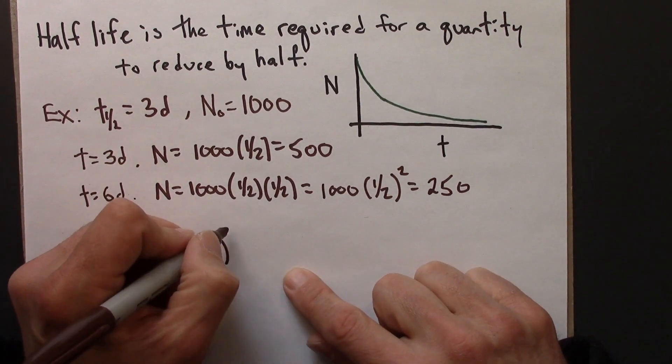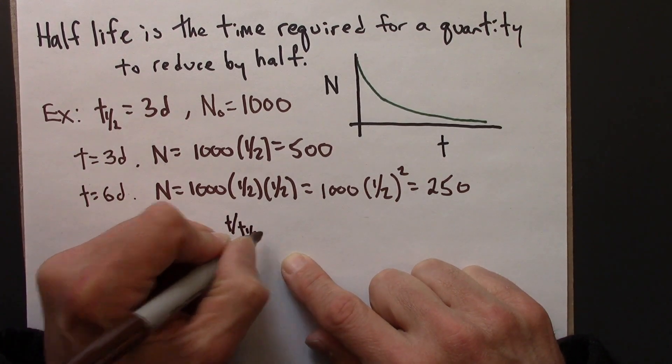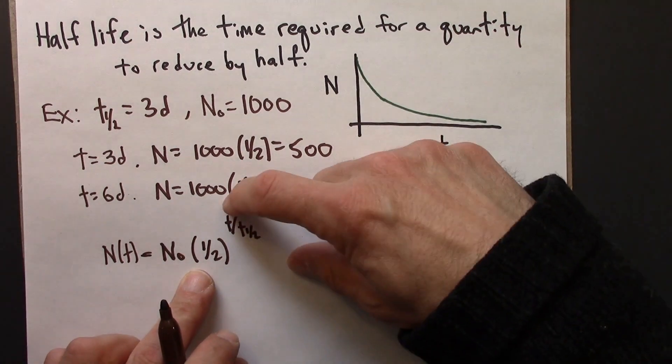And that's going to equal this, a half, raised to the t over t_half. So this is actually what we're doing in our heads, even though you may not have seen this formula.